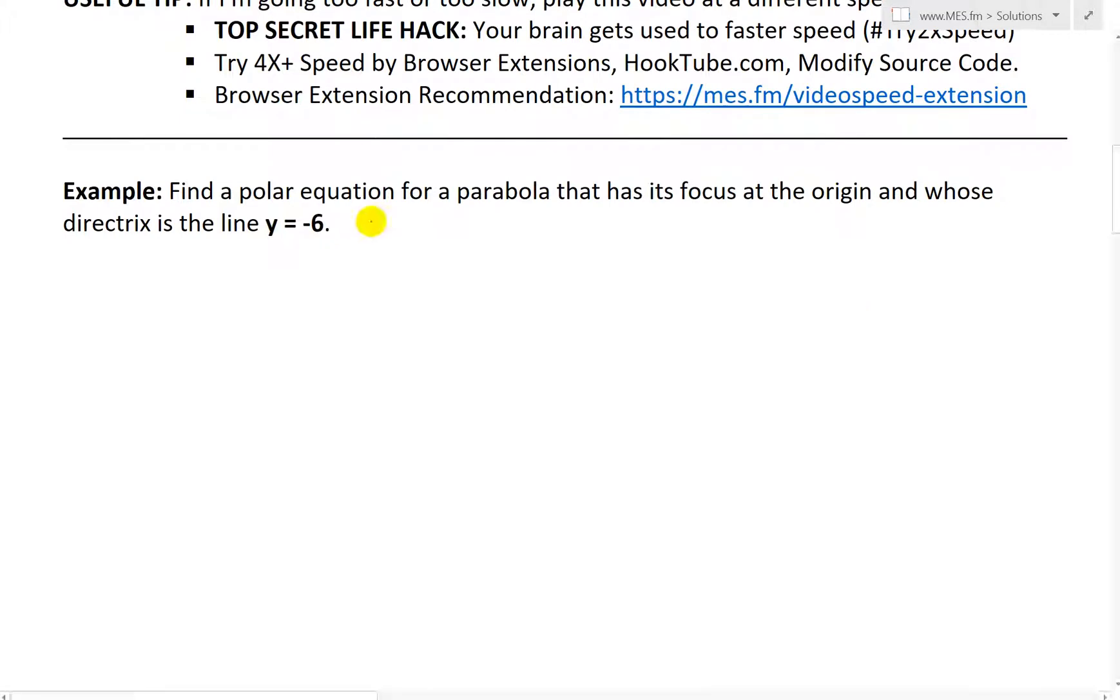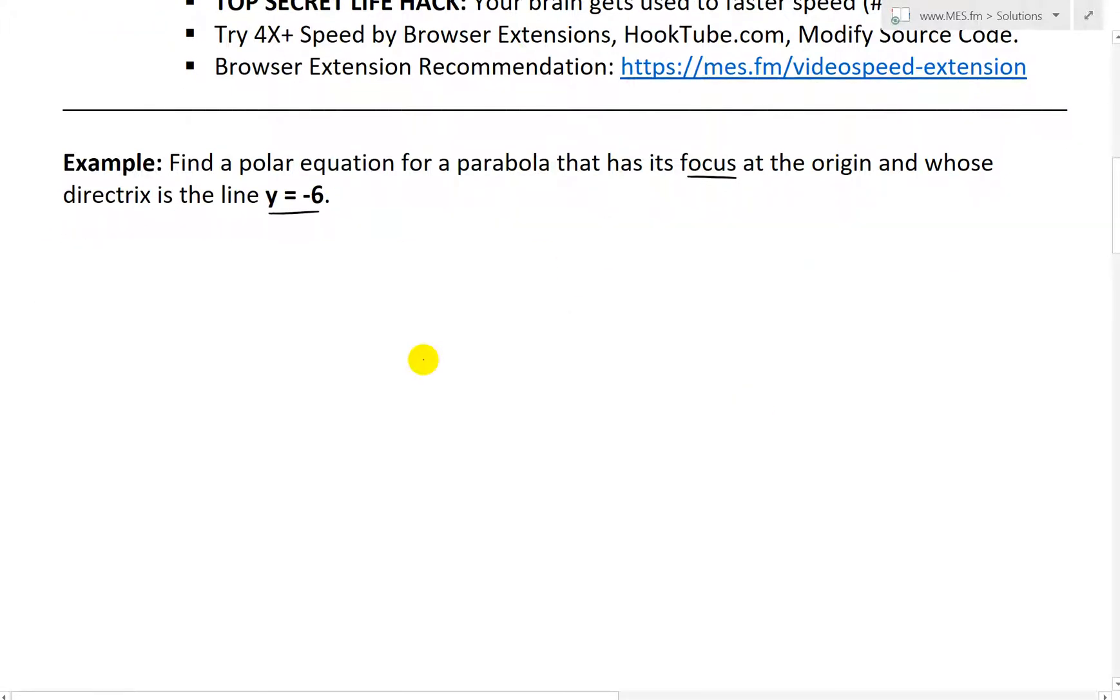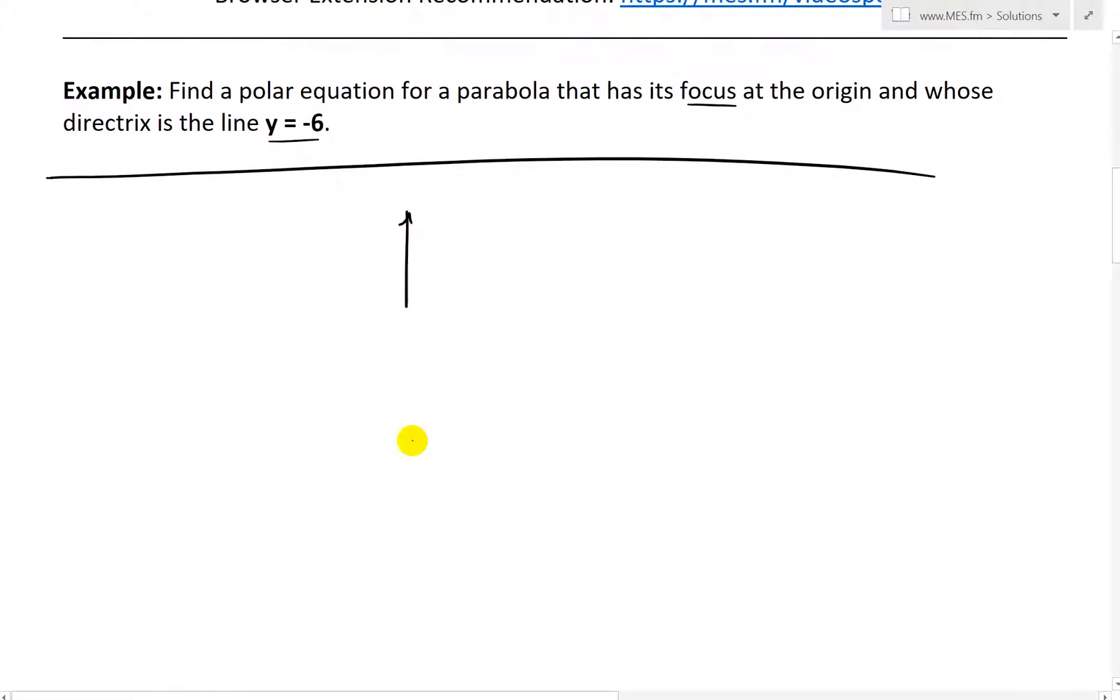It says find a polar equation for a parabola that has its focus at the origin and whose directrix is the line y equals negative 6. So in other words, what we have is something that looks like this. Let me just draw it out. So what we have is, this is the x and y axis. There's the x, there's the y.